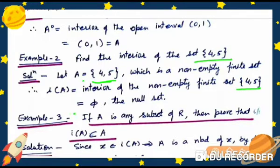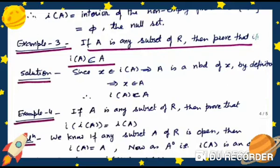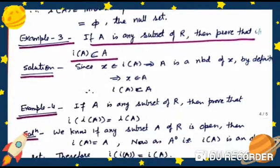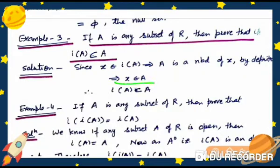Since A = {4, 5} is a non-empty finite set, the interior of A equals φ (the null set). Example 3: If A is any subset of R, prove that iA ⊆ A. Since x belongs to iA, this implies A is a neighborhood of x by definition, so x belongs to A. Therefore iA ⊆ A.